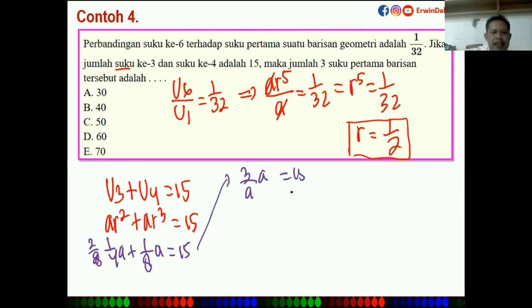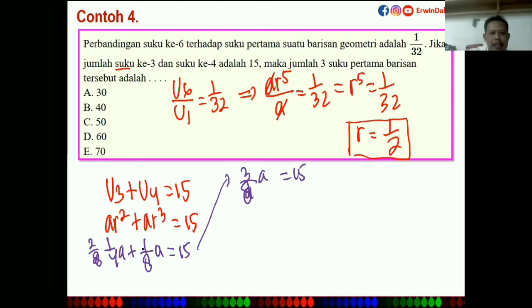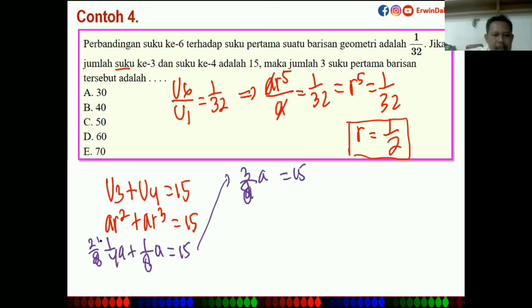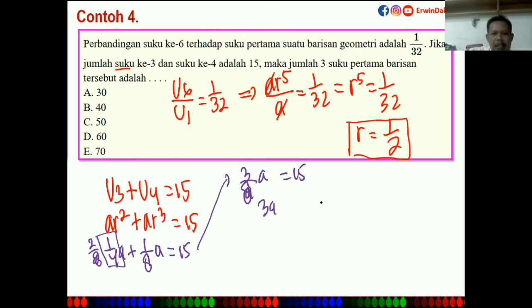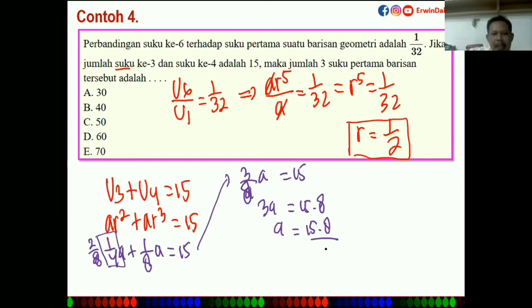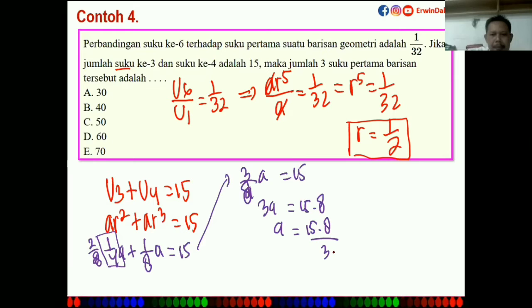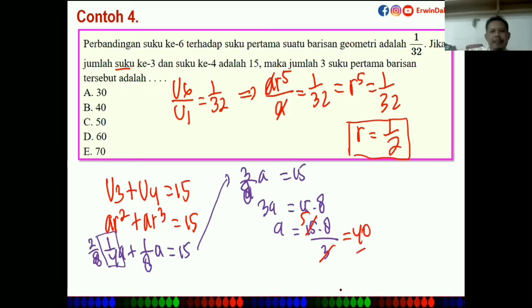Sehingga 3/8A = 15. Kali silang: 3A = 15 × 8 = 120. Maka A = 120/3 = 40.